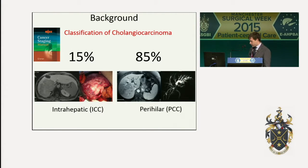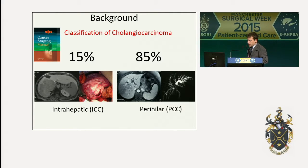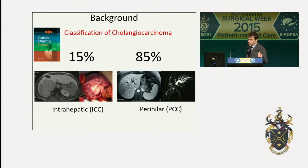Cholangiocarcinoma is a heterogeneous group of malignancies arising from the epithelial cells of the biliary ducts. According to the AJCC staging system 7th edition classification, it can be classified as intrahepatic or perihilar. Intrahepatic cholangiocarcinoma is defined as tumor arising from the intrahepatic bile ducts beyond the second-order branches, and perihilar cholangiocarcinoma is defined as tumor with involvement of the hilar structure that often requires resection of the biliary confluence associated with the liver and caudate lobe.